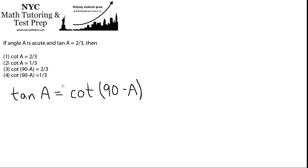So if you can remember that, it actually makes this problem pretty straightforward. Tangent of A is two-thirds, that's what was given to us. And the cotangent of 90 minus A is also going to be equal to two-thirds. So answer choice three is the best.